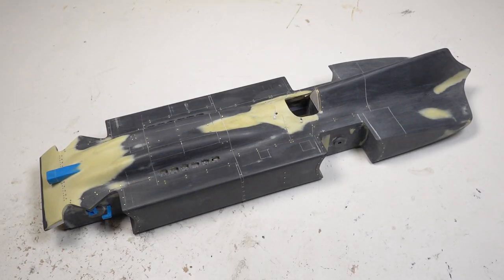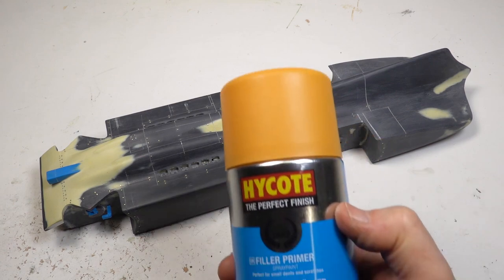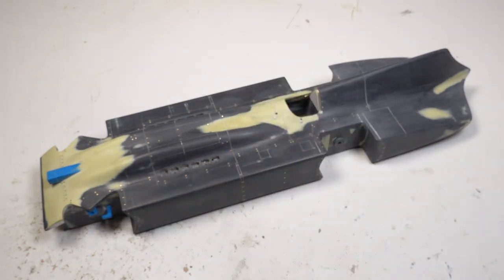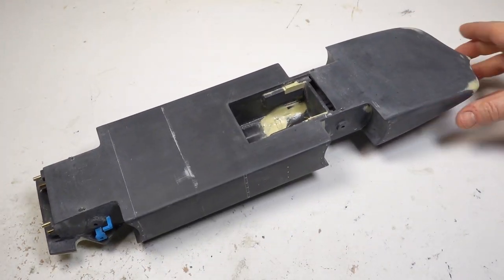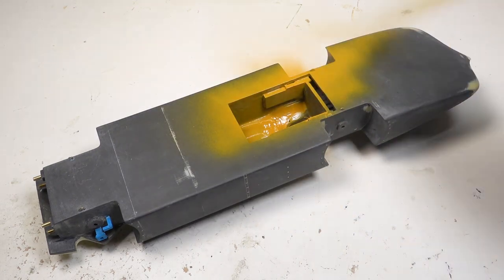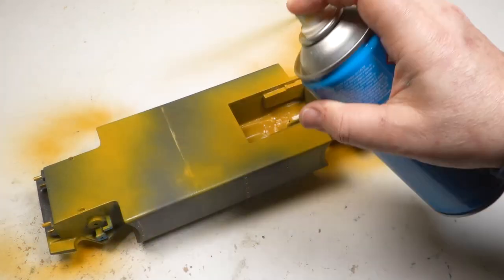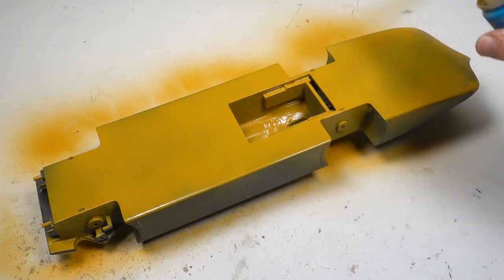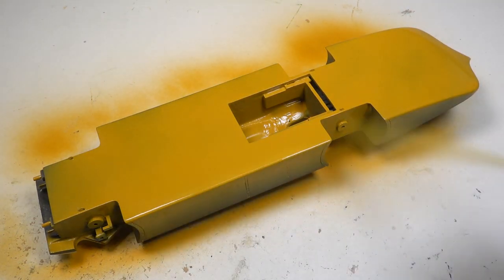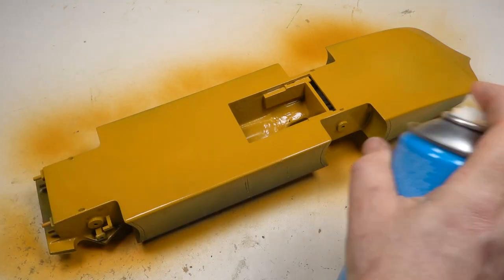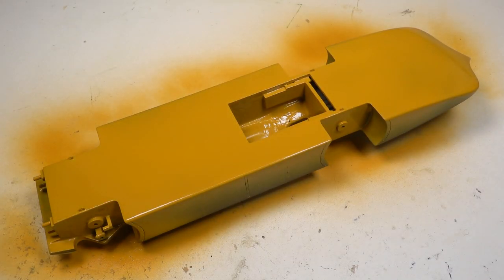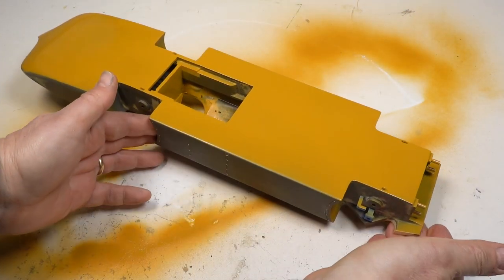My go-to primer for this stage is a filler primer which should fill any of the minor scratches in the bodywork. This goes on really well and once dry can be easily sanded back and re-coated if necessary. I sprayed the underside first before flipping it over onto the small standoffs and then spraying the upper surface.